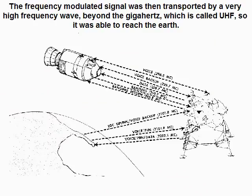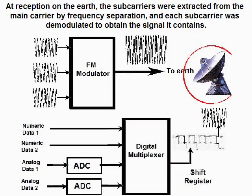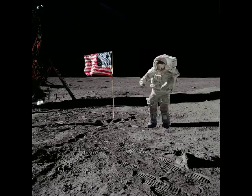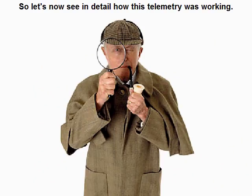The frequency-modulated signal was then transported by a very high-frequency wave beyond the gigahertz, called UHF, so it was able to reach the Earth. At reception on Earth, the sub-carriers were extracted from the main carrier by frequency separation, and each sub-carrier was demodulated to obtain the signal it contains. So let's now see in detail how this telemetry was working.